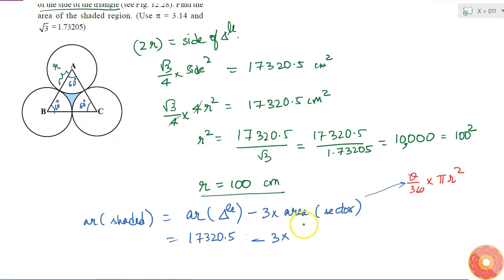So, if I put theta is equal to 60 degrees, I will get it as 60 by 360 into pi is given to me as 3.14. So, 3.14 into R square, radius is 100, so 100 square. So, here what I can do, I know 60 into 6 is 360. So, if I cancel it, I will be left with 6 here, and I also know 3 into 2 is 6. So, if I cancel it, I will get 2 here, and if I divide 3.14 by 2, I will get 1.57.